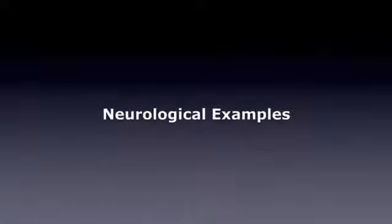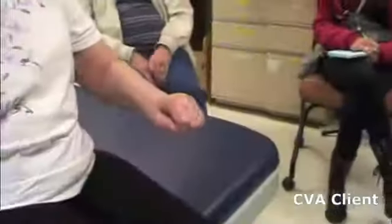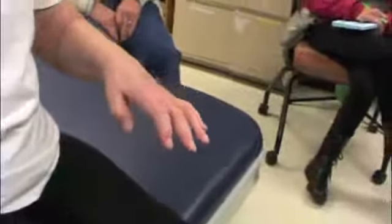Let's now review video examples of neurological clients that are appropriate for the SABO Glove. As you can see with this stroke patient, she is unable to extend her fingers with her wrist in neutral or slight extension. She is also unable to straighten her thumb at the IP joint.